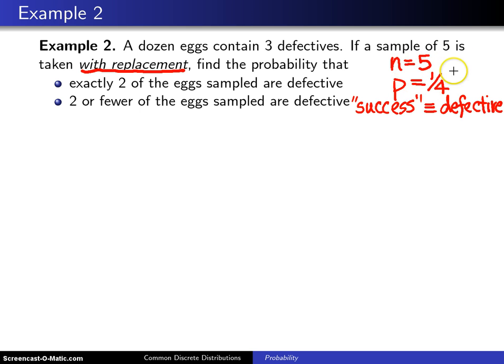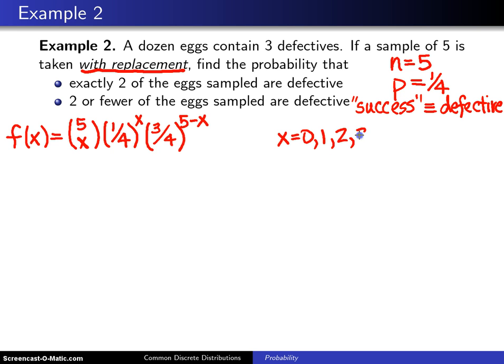Once we have our binomial distribution parameters set, we can write down the probability mass function. And it is 5 choose x, times the probability p, which is one-fourth, to the x, times one minus p, which is three-fourths, to the n minus x. That will be five minus x. And the support starts at zero, and it ends at n, which in this case is five.